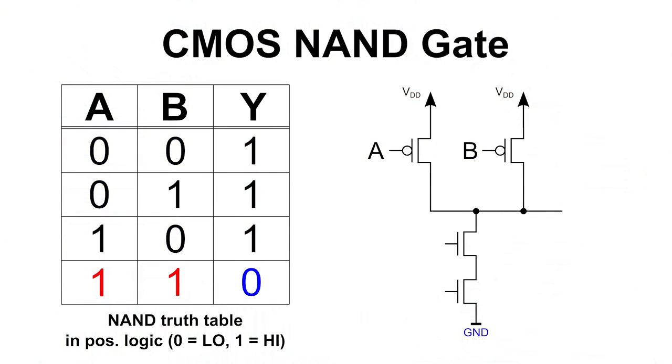But as we have seen before, in this case the pull-down network takes over. So, all four possible states in the truth table are defined.